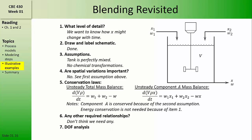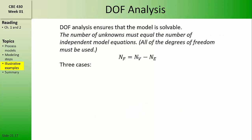The next step is to perform a degree of freedom analysis. You may not have done this in a while, but this was covered in CBE 330 and many other classes. The degree of freedom analysis ensures that the model is solvable. The number of unknowns must be equal to the number of independent model equations in order for us to find a solution to the model. That is, all of the degrees of freedom must be used, where the degrees of freedom are the number of unknowns minus the number of equations.